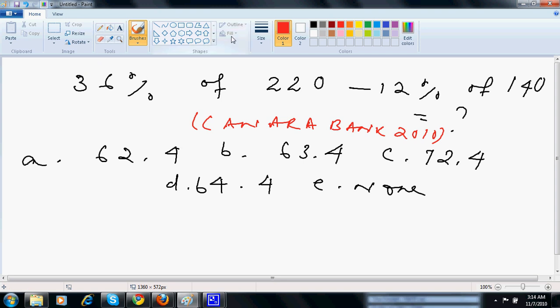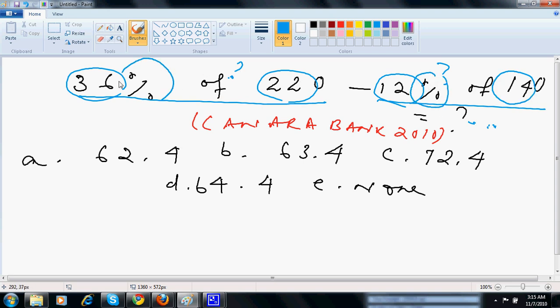Now, if you're solving the problem normally, you want to get 36% of 220 and 12% of 140. To get 36% of 220, it's time-taking because I have to multiply 36 and 22, multiply 12 into 14, take care of the percentage symbols. I will get through the answer, but it's time consuming.